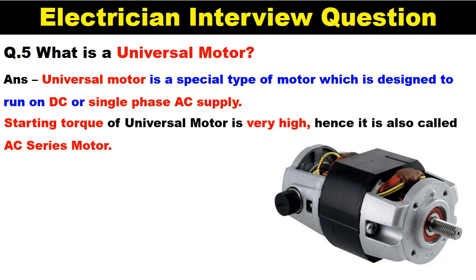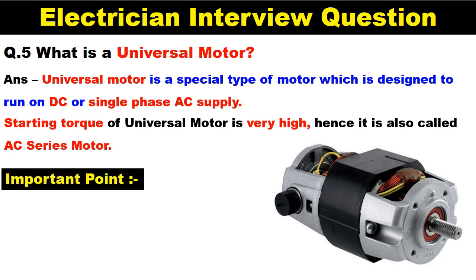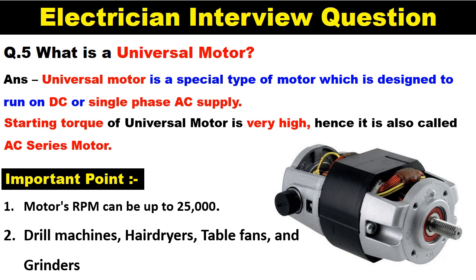Regarding universal motor, there are a few more things to know. If we run this universal motor on no load — meaning if we do not connect any load — then the RPM of this motor can be up to 25,000 RPM, which is very high. We use this universal motor in drill machines, hair dryers, table fans, and grinders.